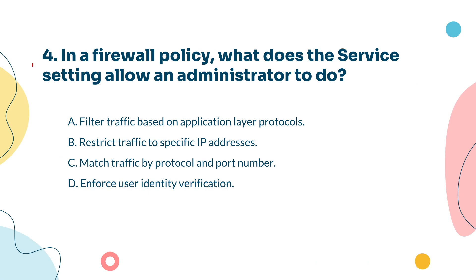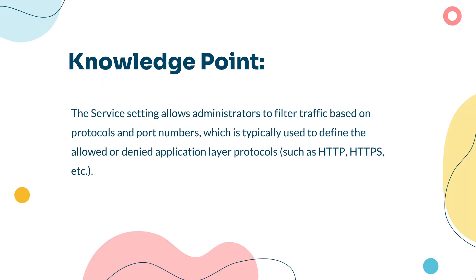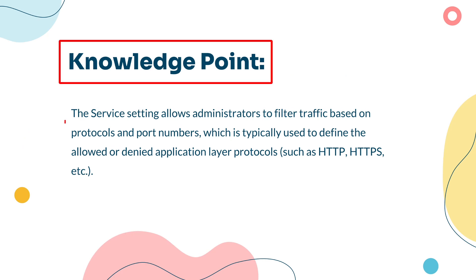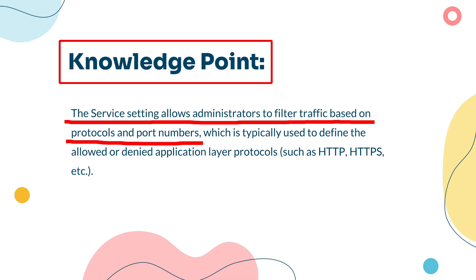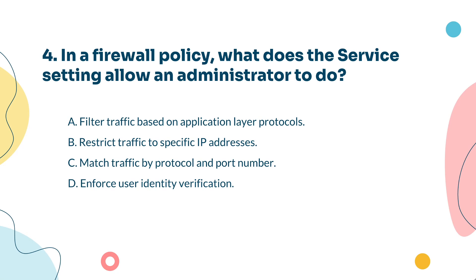Question 4: In a firewall policy, what does the service setting allow an administrator to do? The service setting lets you control traffic based on specific protocols and port numbers. So if you want to allow or block certain types of traffic, like web traffic on port 80 or secure traffic on port 443, this is where you do it. The service setting allows administrators to match traffic based on protocol type and port numbers — therefore, Option C is correct.